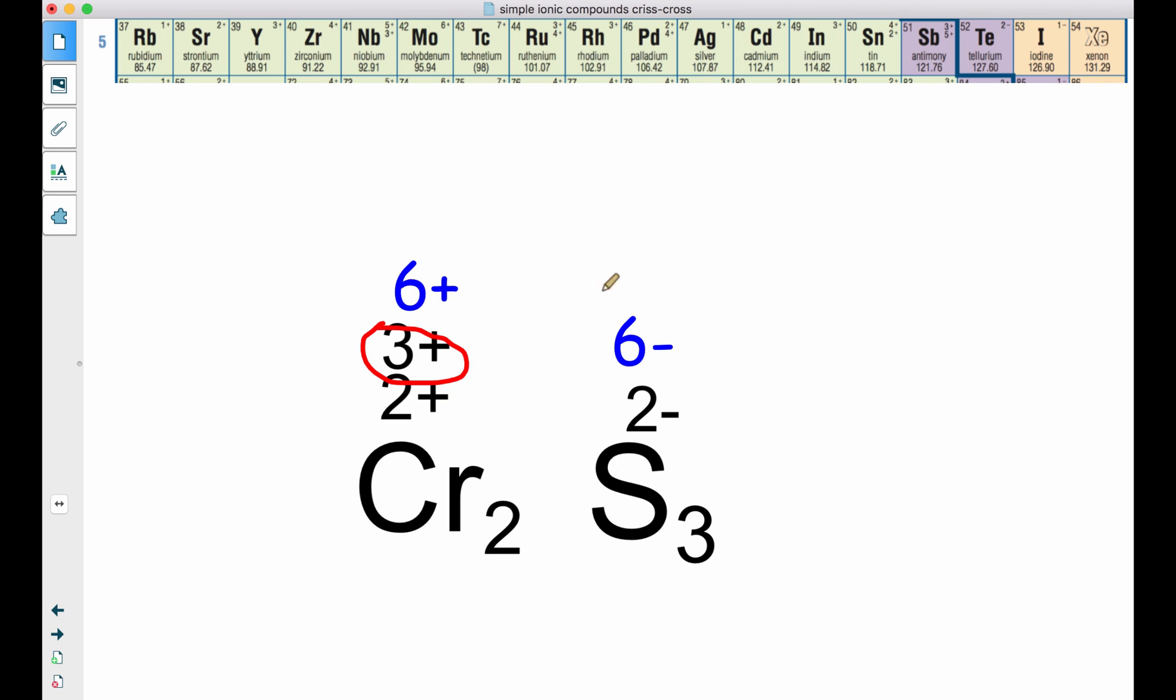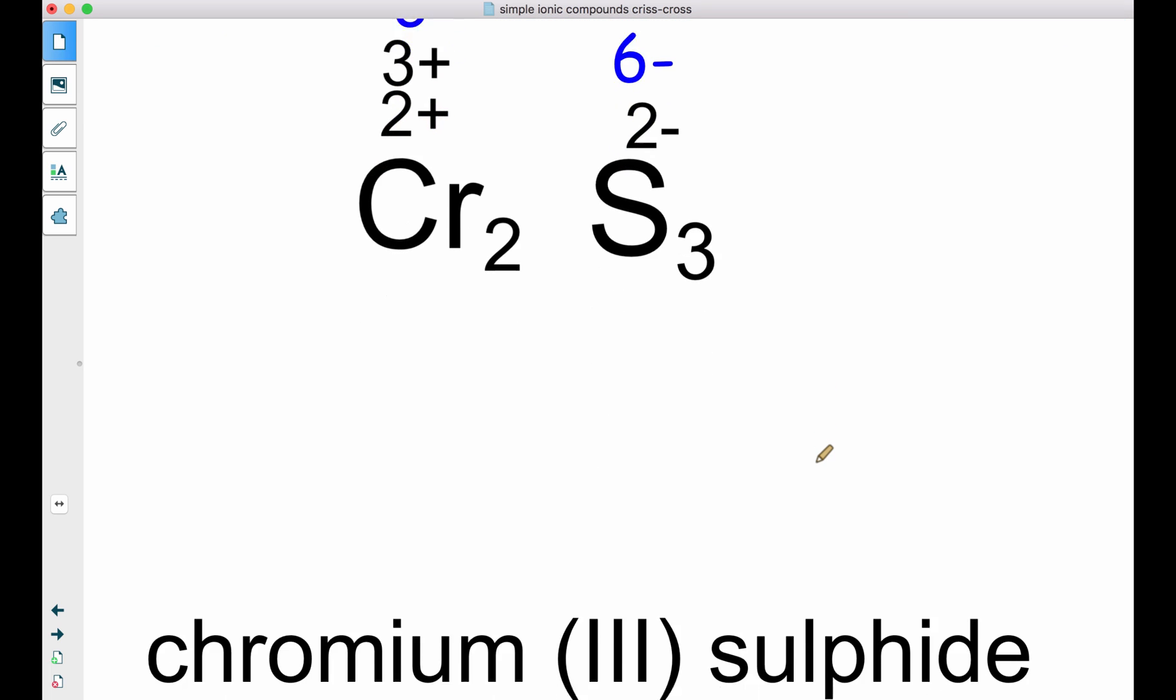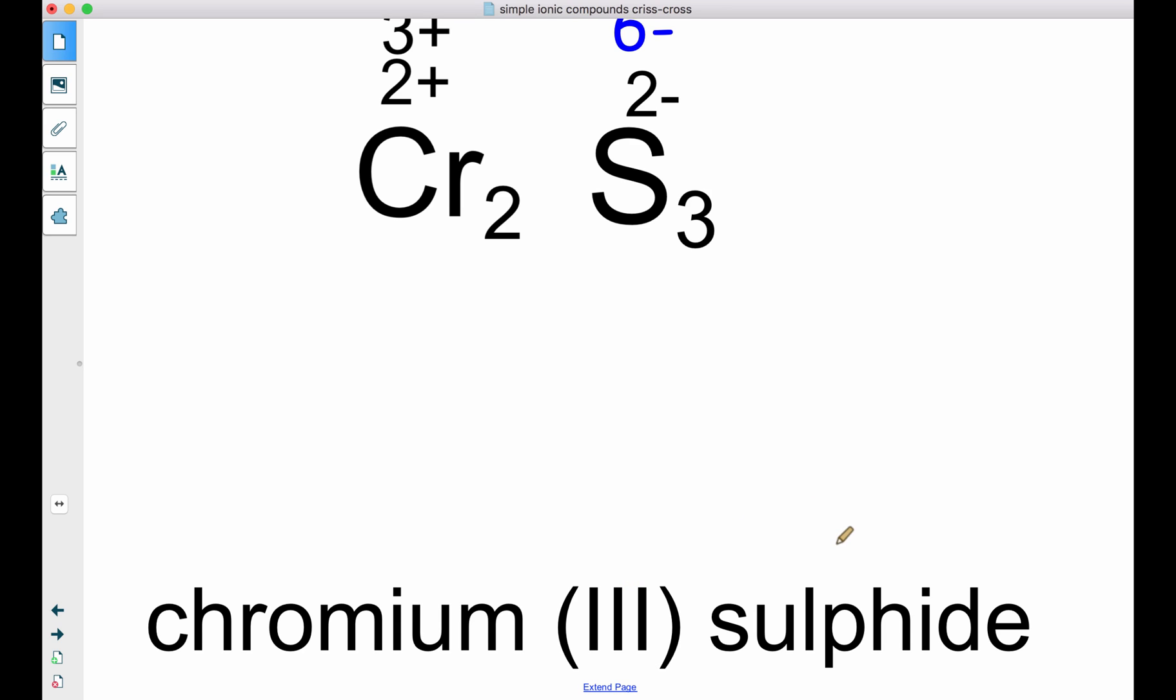That gives me 6+. This is my 6-. Put them together, they cancel the charges out, which means they're neutral. So we have to use chromium (III) to make the compound chromium (III) sulfide.